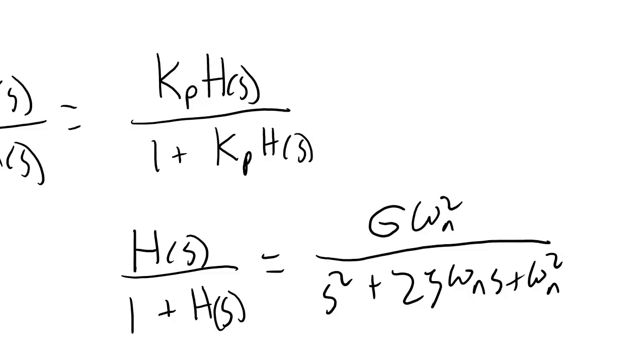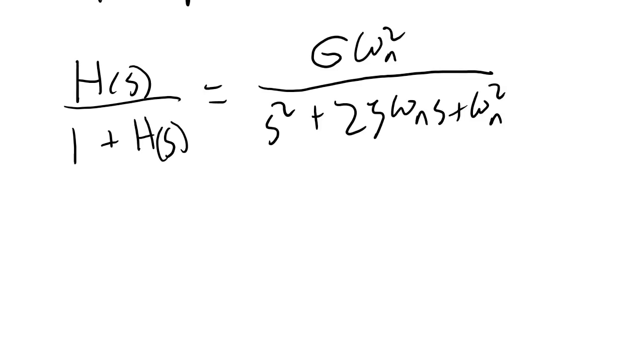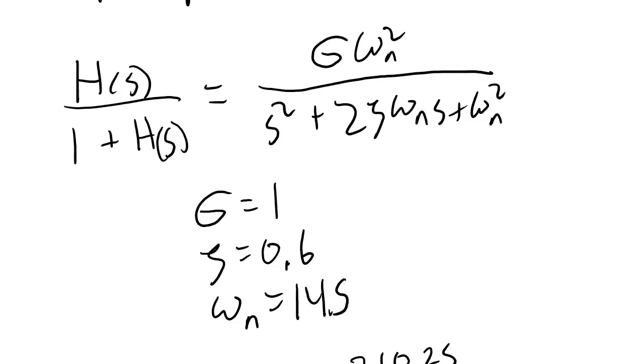Now you've already calculated values for the gain, the natural frequency, and the damping ratio value when kp is equal to one for your specific system. I'm going to now go and get the numbers that I calculated for g omega n and zeta for my system and put them in to give you an example of what we're going to do here. When I did the kp equals one test to my own system, I found the gain was equal to one, zeta was equal to 0.6, and omega n was equal to 14.5. I'm going to plug these numbers into this equation.